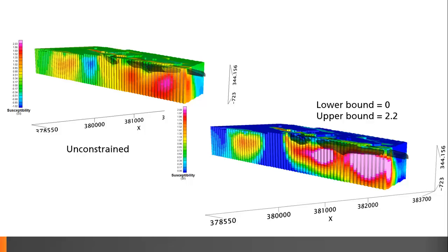Here, an unconstrained susceptibility result gives a smooth distribution of both positive and negative susceptibilities.